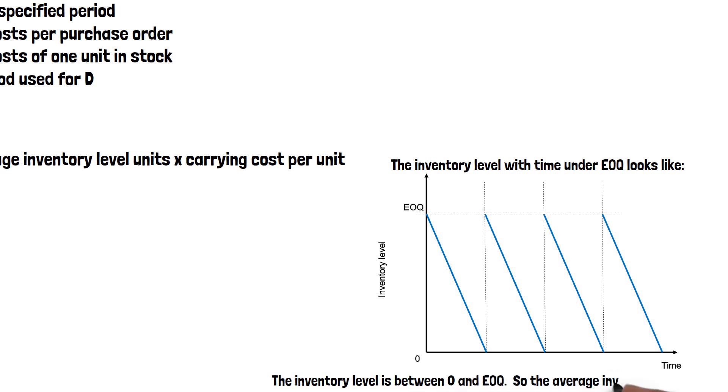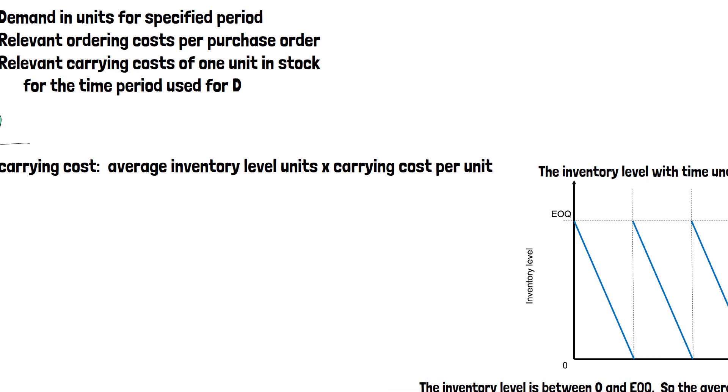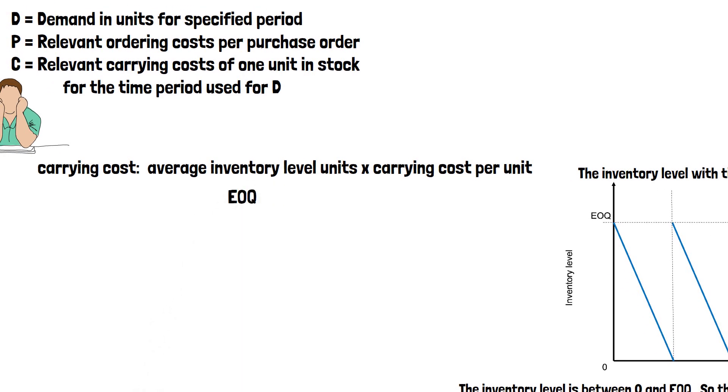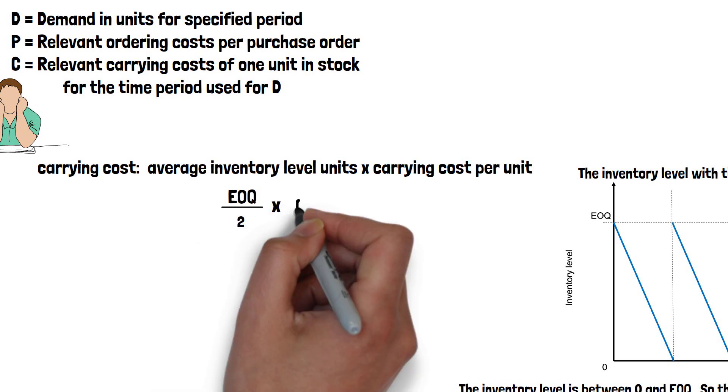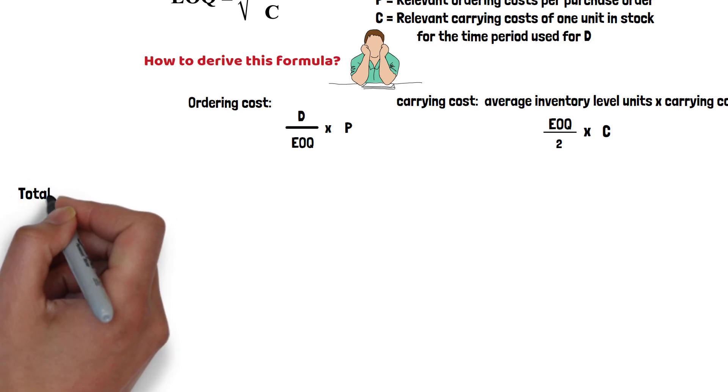So the average inventory is half of EOQ. The average inventory level is EOQ divided by 2 times C, that's the carrying cost.